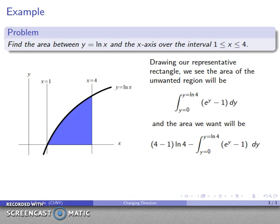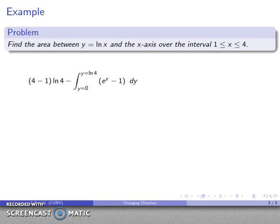And at this point, it is a matter of evaluating a particular algebraic and calculus expression, 4 minus 1 times ln 4 minus a certain definite integral. And I'll go through the steps on that, nothing too exciting here, 4 minus 1 is 3 ln 4.